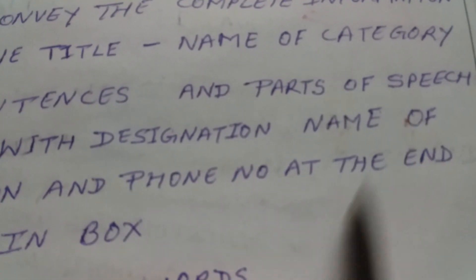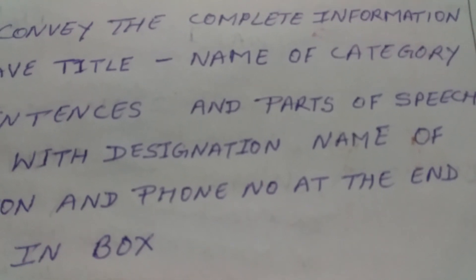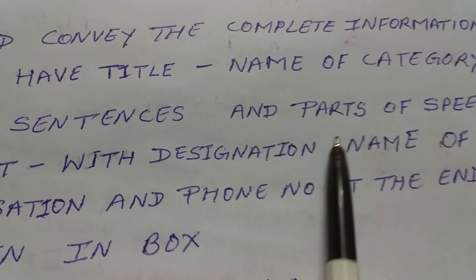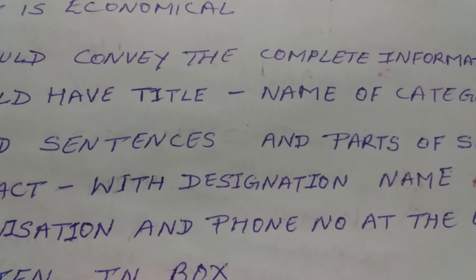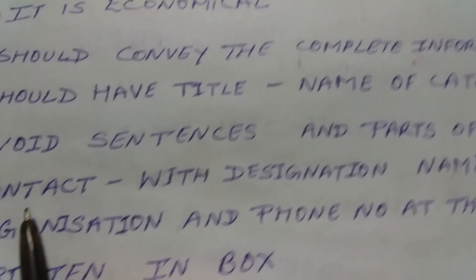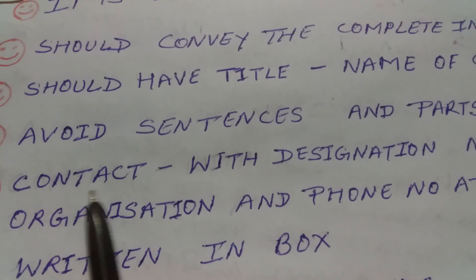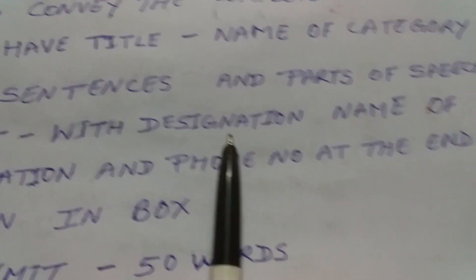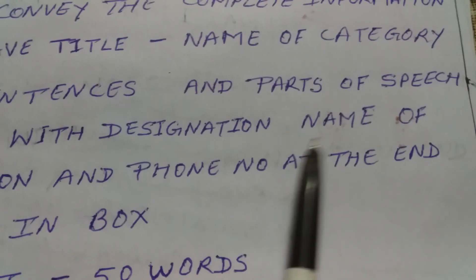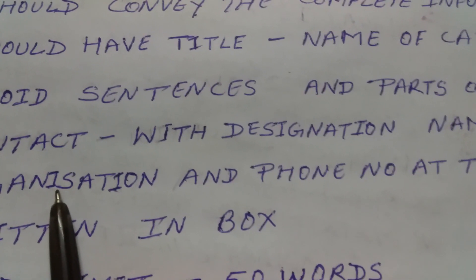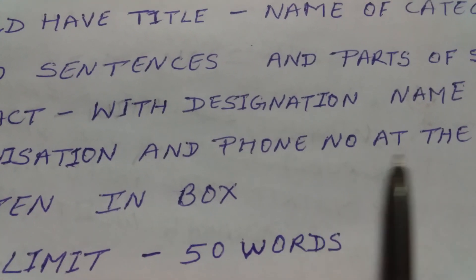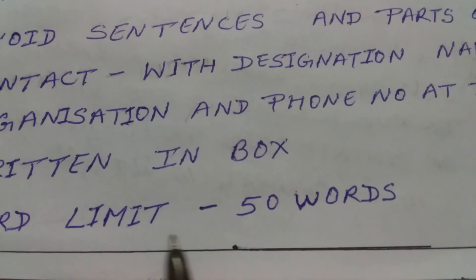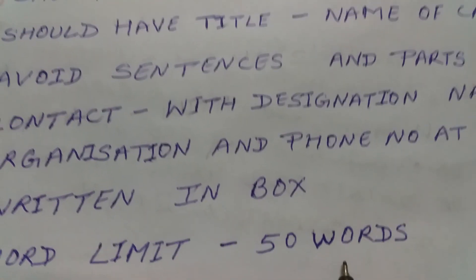Parts of speech such as articles and prepositions are not required. At the last, we write the contact word, and with the contact word we write the designation — who is writing the advertisement and what is their post — then the name of the organization, and the phone number at the end. It should be written in a box, and the word limit should be 50 words.